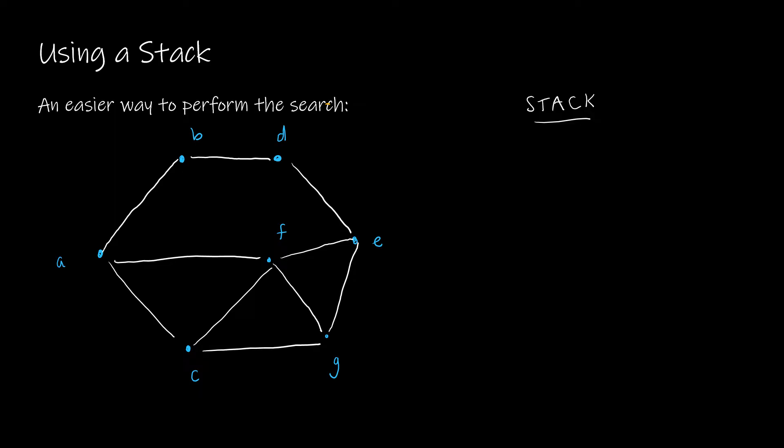We would start with our root node. So we're going to start with A. And I'm going to put visited over here. So if I start with A, I have visited A. And in our stack, we're going to add any vertices that are adjacent to A. So in this case, that would be B and C. And we can choose either B or C. So let's say I choose B.